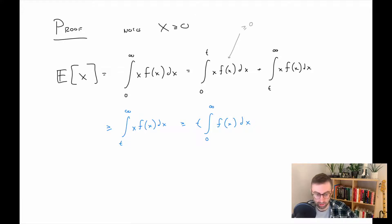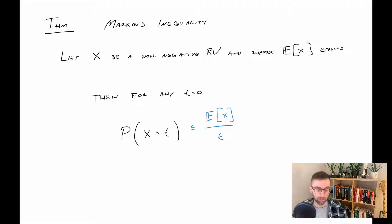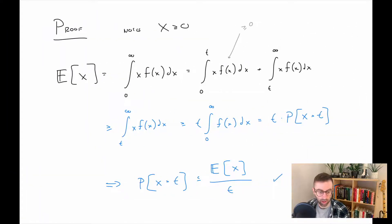And then the next thing we're going to do is realize that that new integral that we have, the integral from t to infinity of f(x)dx, is exactly a probability statement, in particular the probability that we're interested in. So that is now t times the probability that x is greater than t. And then with a little rearranging of what we have here, that implies that the probability that x is greater than t is bounded above by the expected value of x divided by t, which is exactly what we were looking to prove. So that's Markov's inequality.